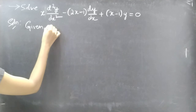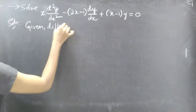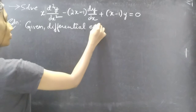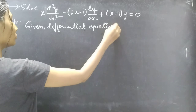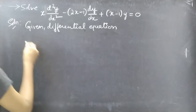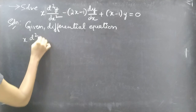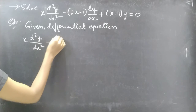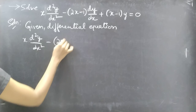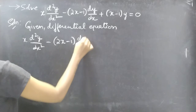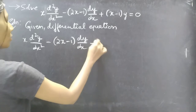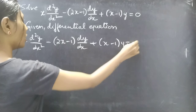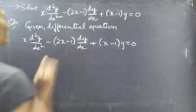Given differential equation: x d²y/dx² minus (2x − 1) dy/dx plus (x − 1)y equals 0.